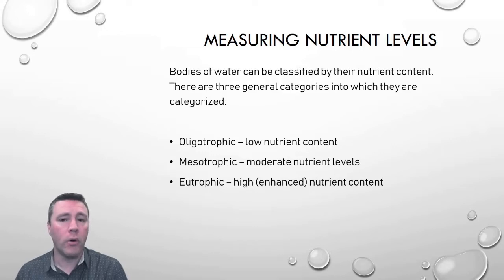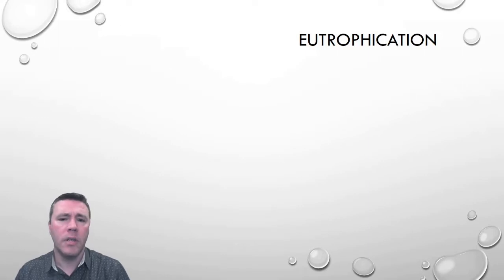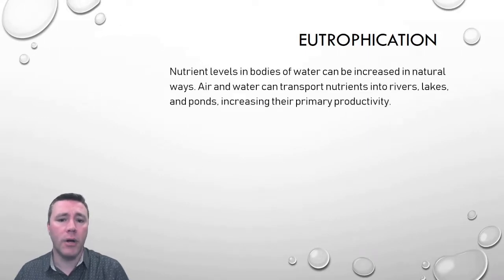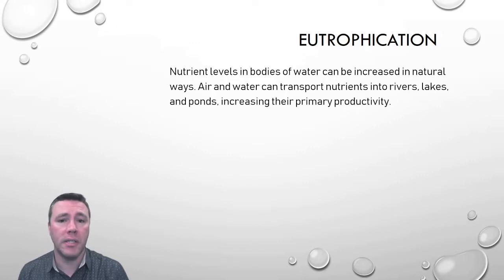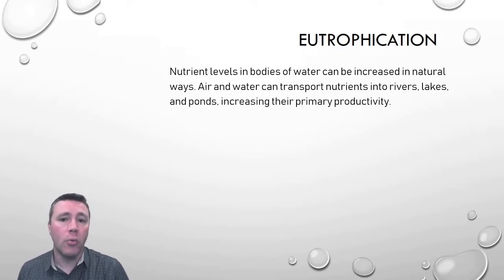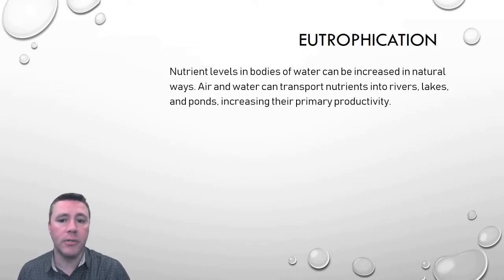What we're going to be focusing on in this video is, of course, eutrophication. The amount of nutrients in a body of water can be increased under natural processes. Air and water are constantly moving around nutrients. When rivers flood, they can bring in new nutrients from upstream to downstream, and that would, of course, increase primary productivity.